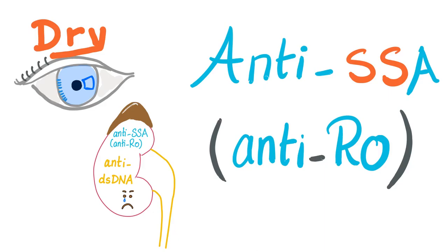Hey guys, it's Medicosis Perfectionelis continuing our series about rheumatology. We have had lots of videos before — we've talked about anti-nuclear antibodies, anti-neutrophilic cytoplasmic antibodies also known as ANCA, the rheumatoid factor, anti-CCP, anti-ribosomal P-protein, and anti-U1 RNP.